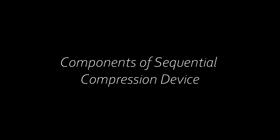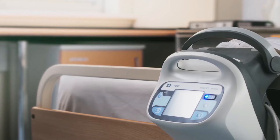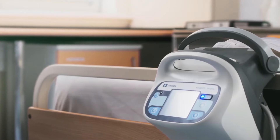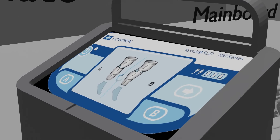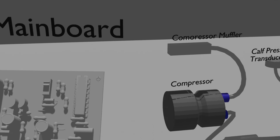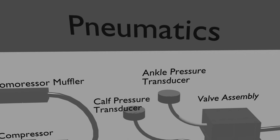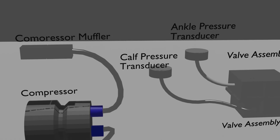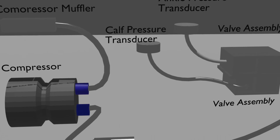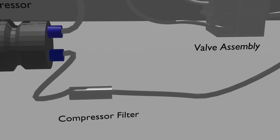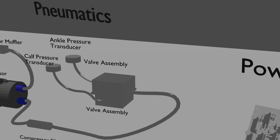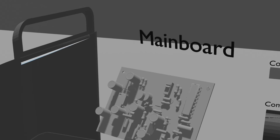Let's look into the components of sequential compression devices. The major internal components are the main PCB, pneumatics block, air compressor, and power supply. The main PCB controls the pneumatic valves and air compressor according to the settings, and controls the air pressure movement in the cuff. In the front of the device, you have a user interface panel which allows the user to control the settings. Some devices are also available with a wireless remote which can be used by the patient to adjust the settings as per their comfort.